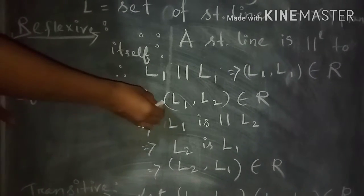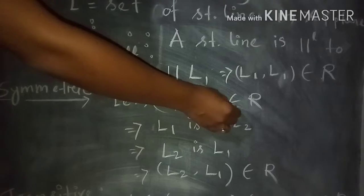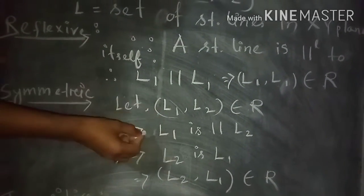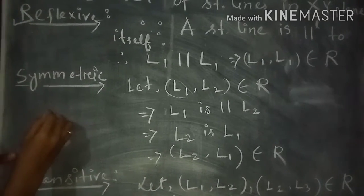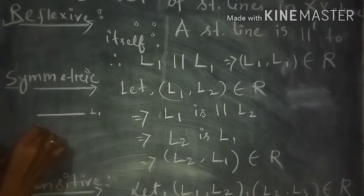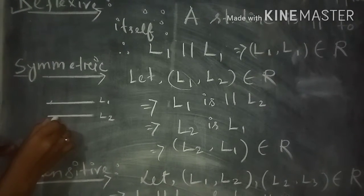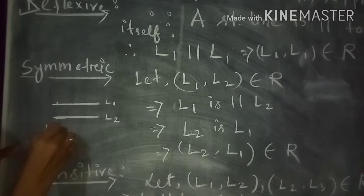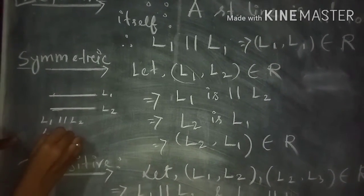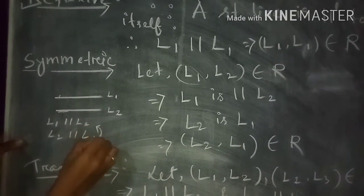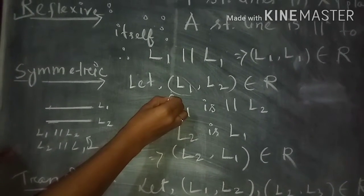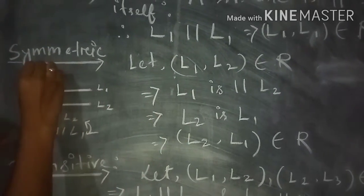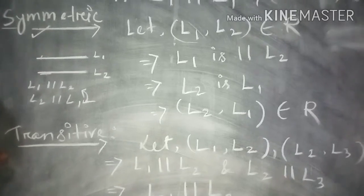For symmetry, let (L1, L2) belong to R. By definition, L1 is parallel to L2. Since L1 parallel to L2 is the same as L2 parallel to L1, we have (L2, L1) belongs to R. Therefore this relation R is symmetric.